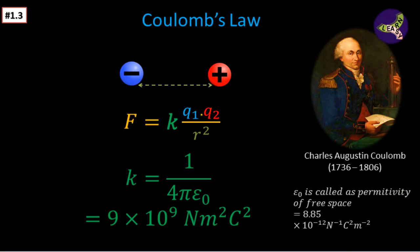And epsilon naught is called the permittivity of free space, and that is equal to 8.85 into 10 to the power minus 12 coulomb square per newton meter square.